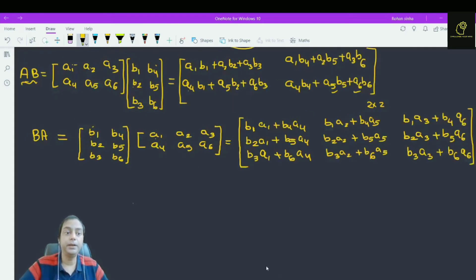Matrix B into A is given by this is our matrix B and this is our matrix A. By using the concept of matrix multiplication, take B row-wise and here column-wise. What we find? This is B1 A1 plus B4 A4.